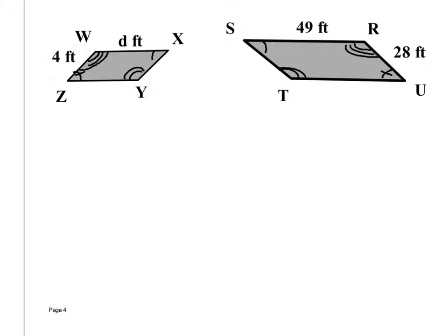Here they give two figures and say they're similar, but the problem is most people think the right side always goes with the right side and the left with the left — that's not always how it works. These figures are mirror images of each other. Angle X doesn't go with angle R just because it's on the top right — it goes with angle S. Angle Y goes with angle T. You can tell by the symbols. It's really important to match corners correctly because that sets up which sides are proportional. Set these up as small over large.